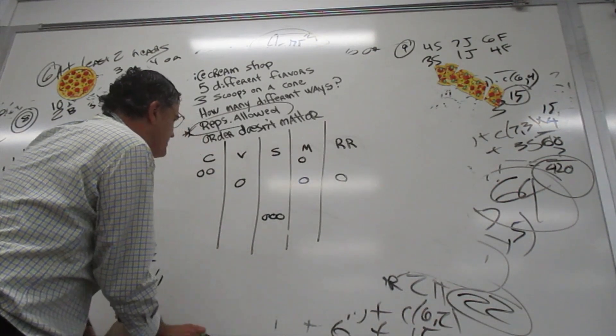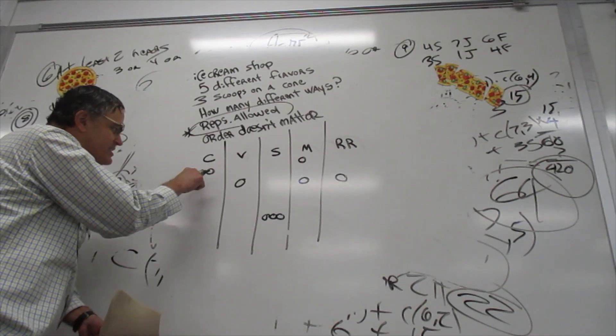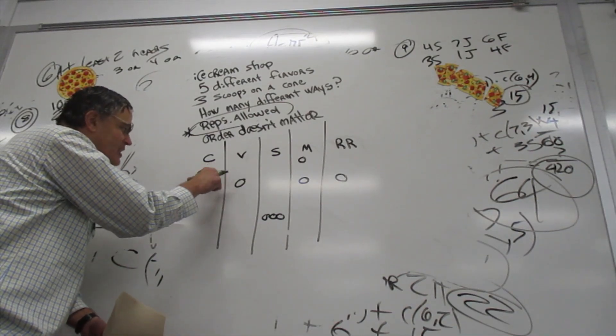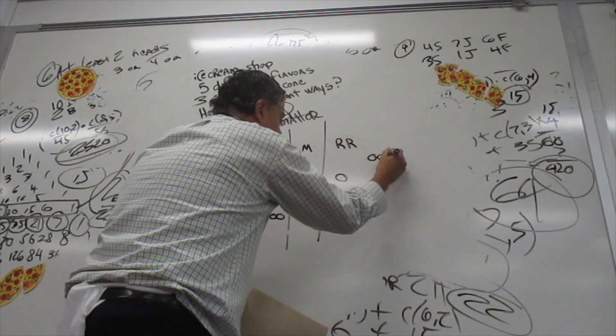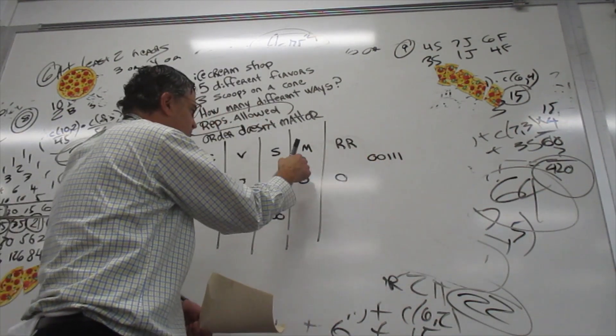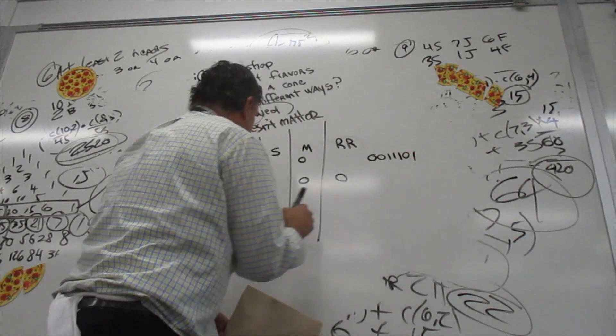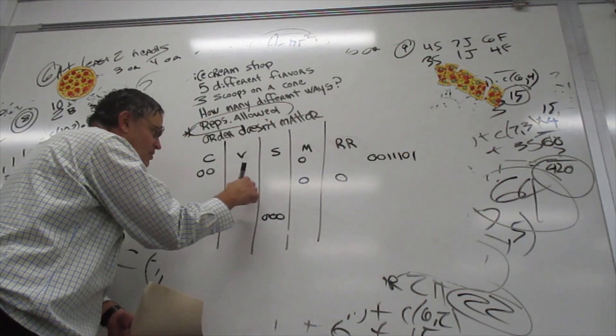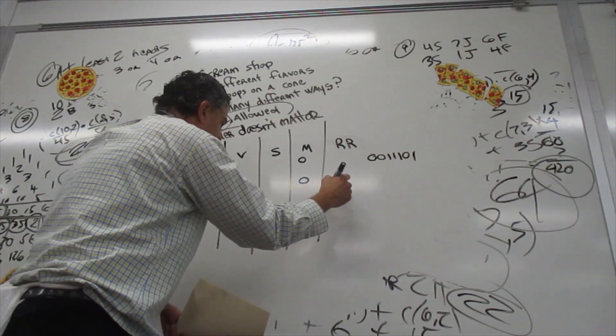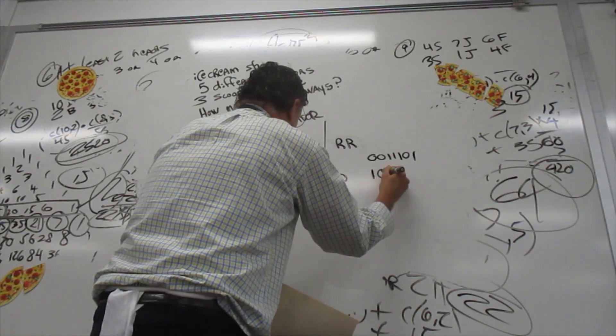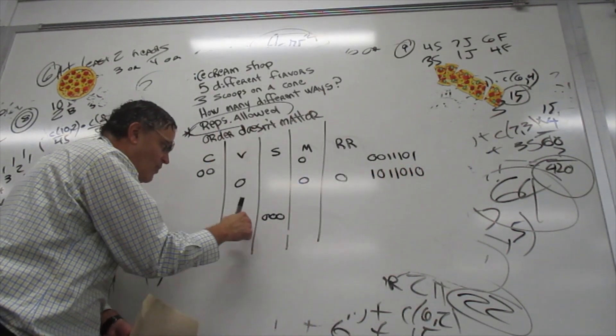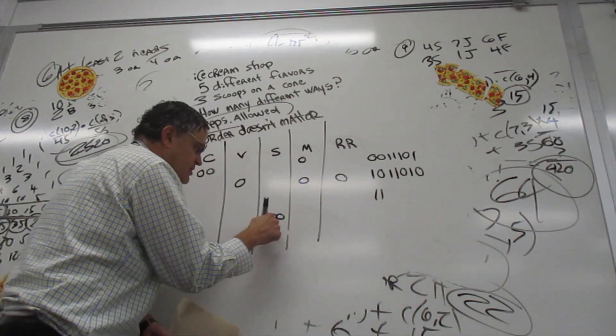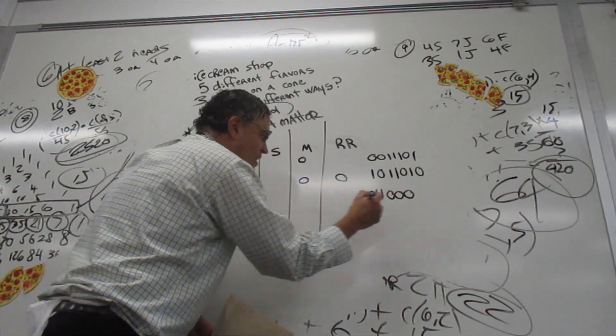So three strawberry scoops would look like this. Now, when you have this, you can read this off. Well, this looks like a 0, 0, 0, and that looks like a 1. 0, 0, 1, 1, 1. And then we have 0, 1. Over here we have 1, 0, 1, 1, 0, 1, 0. And then over here we have 1, 1, 0, 0, 0. And then we have 1, 1.